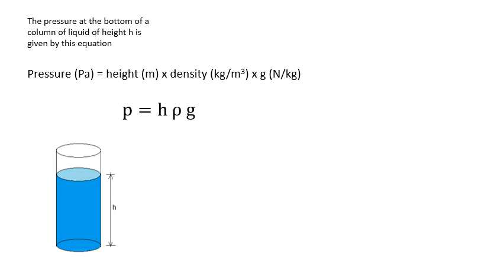The pressure at the bottom of a column of fluid of height h is given by the equation P = hρg. You don't need to learn this one — it will be on your formula sheet. Here, h is the height or depth of the water, ρ (rho) is the density of the water in kilograms per metre cubed, and g is approximately 10 or 9.8 newtons per kilogram on earth.